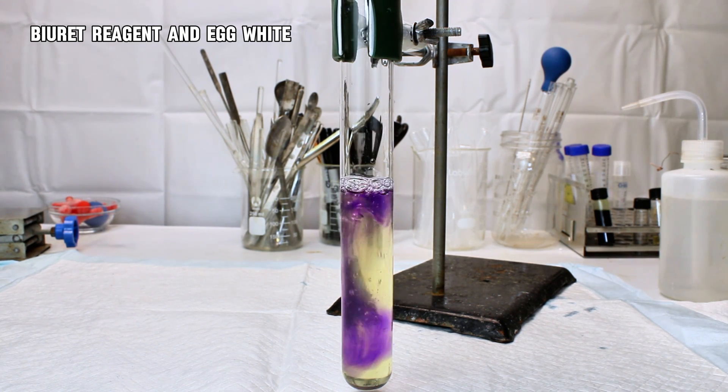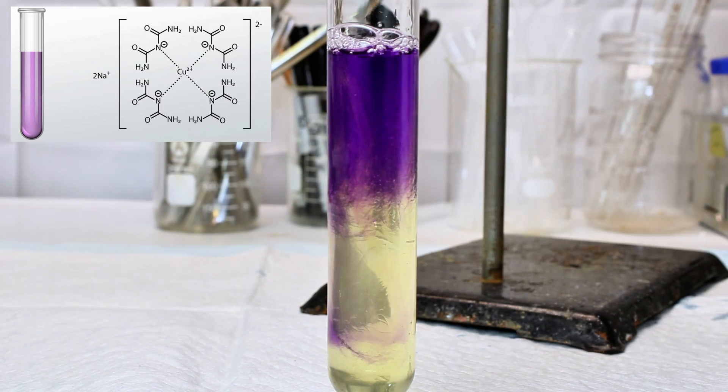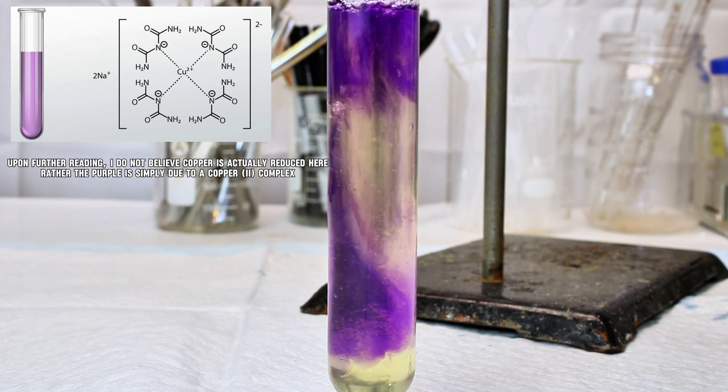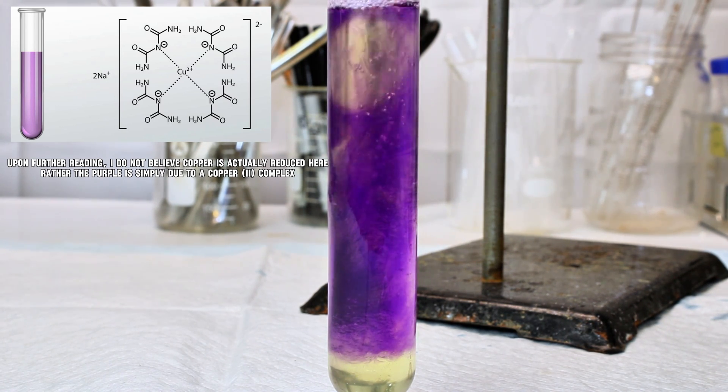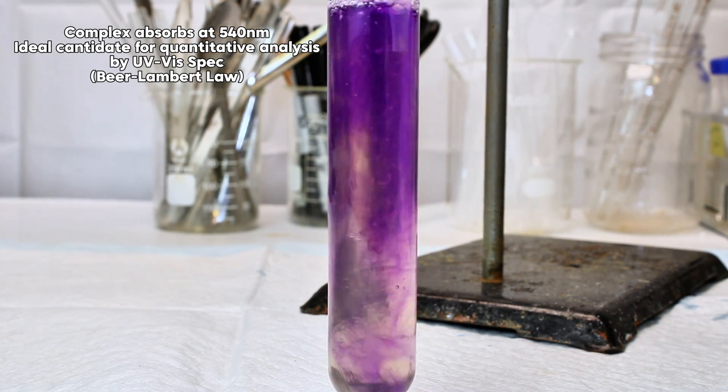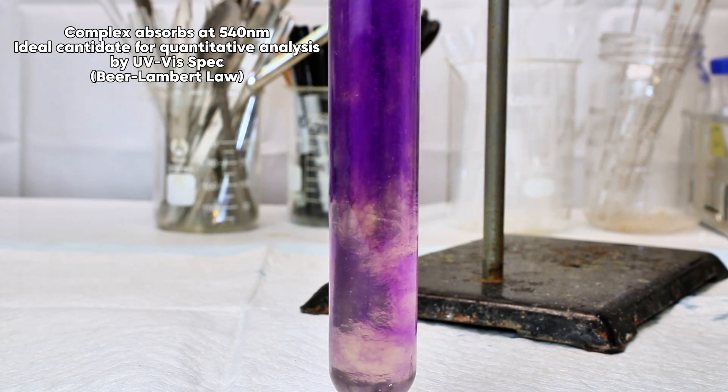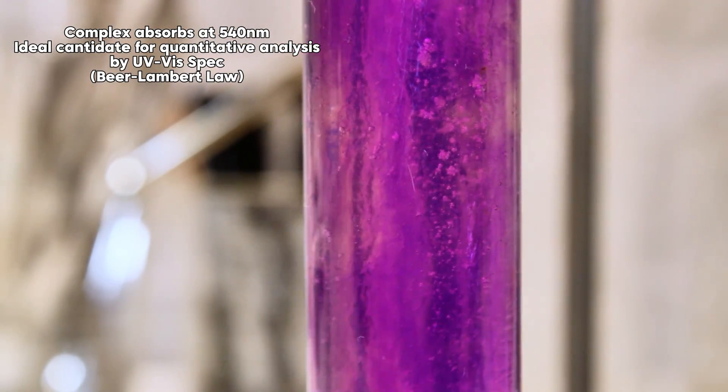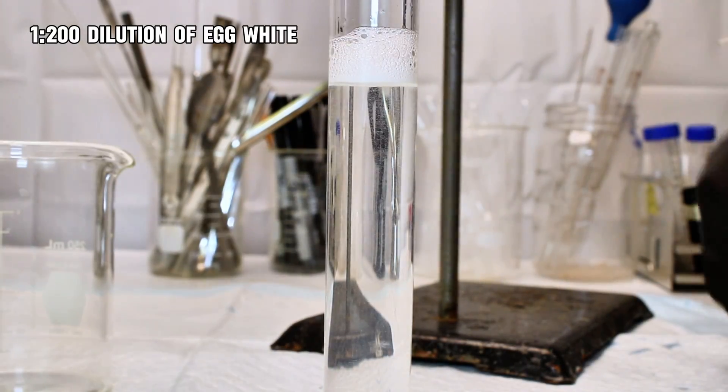This color is the result of a two-step reaction wherein copper first binds to the nitrogen present in the peptides of proteins, and is then reduced to its plus one state where it forms the purple complex. This complex absorbs at 540 nanometers, and the intensity of the absorption is directly proportional to protein concentration in accordance with the Beer-Lambert law, making this a very useful chemical to quantify protein concentration with the aid of a UV-Vis spectrophotometer.